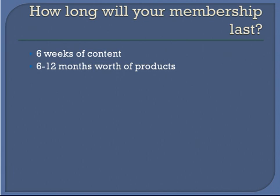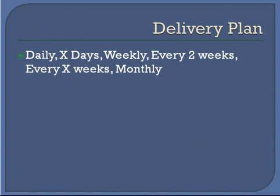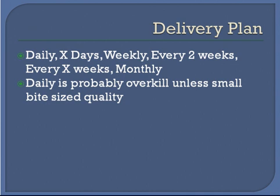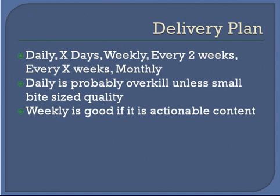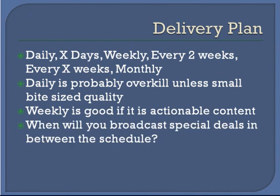Once you figure out how much content you have and how long it'll last, you can understand your delivery plan — and that's very easy. You can do daily, every X number of days, weekly, every two weeks, every X weeks, monthly, and so forth. Once you understand your delivery plan and set up your autoresponder, all you have to do is create a new follow-up for every one of those days or weeks. Daily is probably overkill unless it's small, bite-sized quality content. Weekly is good if it's actionable content, because most people are not going to have time to do something every single day, but they'll definitely have time to do it every single week. So think about your audience, think about your competitors, and then create a plan from that point.